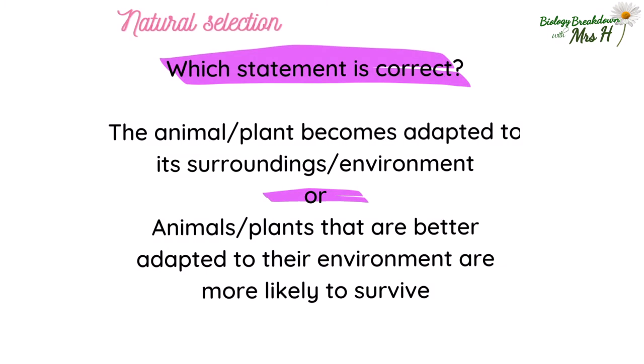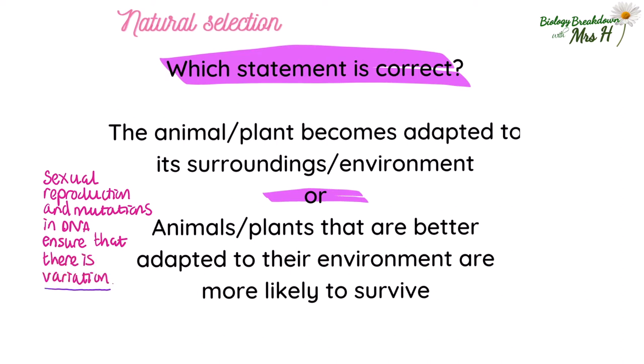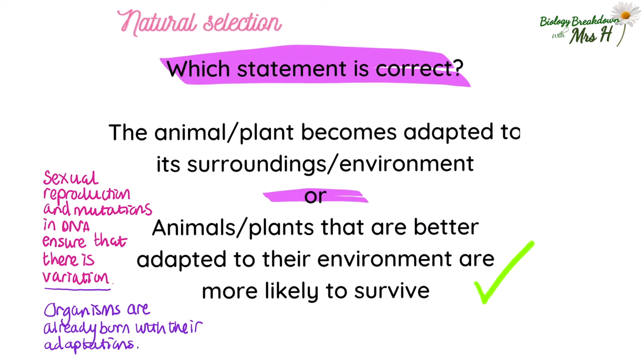When linking adaptations to natural selection, the phrase 'adapted to' is misused — and it's not surprising when you hear this phrase on TV documentaries. Which is correct: the animal or plant becomes adapted to its environment, or animals and plants that are better adapted to their environment are more likely to survive? Sexual reproduction and mutations in DNA and alleles cause variation and therefore adaptations. It is the animals or plants that are better adapted to their environment that will survive — they haven't just suddenly become adapted. They were born with these adaptations, and if these adaptations mean they are more likely to survive, then they're more likely to reproduce and pass on those beneficial alleles to their offspring.